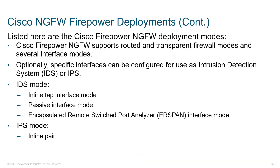When looking at a Firepower deployment, similar to the ASA, we support both routed and transparent mode. Optionally, you can configure intrusion detection as well as intrusion prevention. When we talk about IDS, this is typically on the sidelines — the sensor here is basically just a passive tap. The Firepower appliance with the interface is just listening.